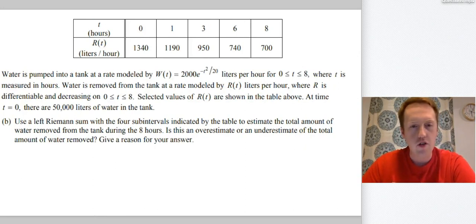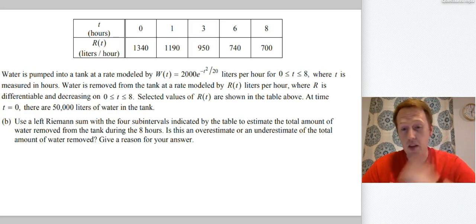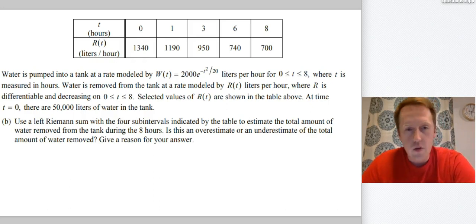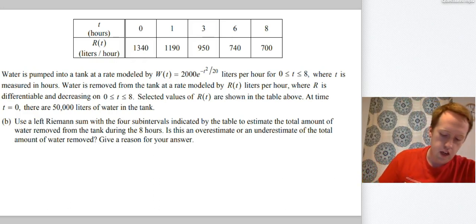All right, now all the annotations are gone, but remember what we talked about, rate in, rate out, initial value, R is decreasing and differentiable. Use a left Riemann sum with the four subintervals indicated by the table to estimate the total amount of water removed from the tank during the eight hours. Is this an overestimate or an underestimate of the total amount of water removed? Give a reason for your answer. Okay, first thing we got to do, the left Riemann sum. They told us to do a left Riemann sum, we had better do a left Riemann sum.